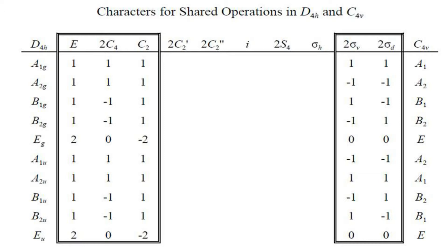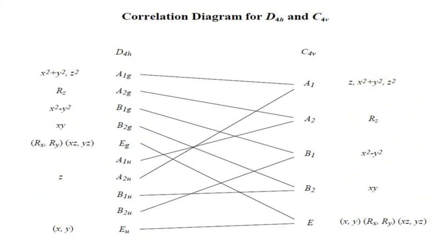The physical significance of correlations is this: C4v is a subgroup of D4h, and characters for the subgroup and characters for the main group are the same for shared operations. The operations which are common have the same characters — character is a function of the operation. With this diagram you will understand correlations: in D4h two irreducible representations correlate to one irreducible representation in C4v.